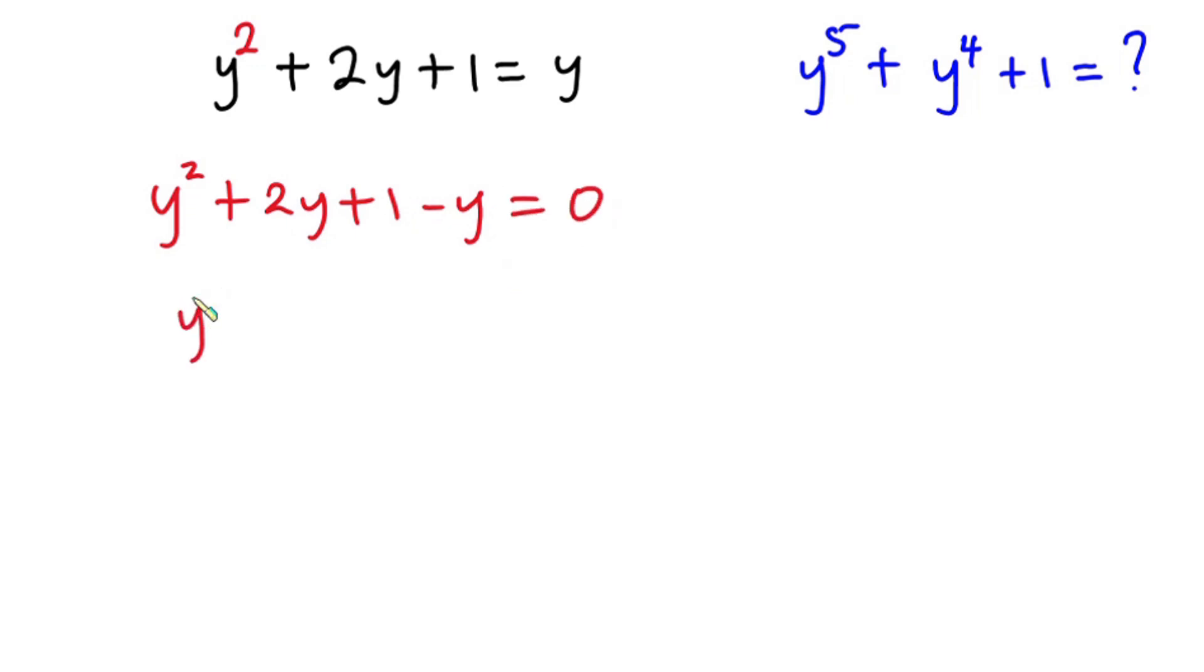So we have y to the second power, then 2y minus y is y, then plus 1 is equal to zero. Now let's make the terms with the y variable the subjects. So we have y to the second power plus y is equal to negative 1.